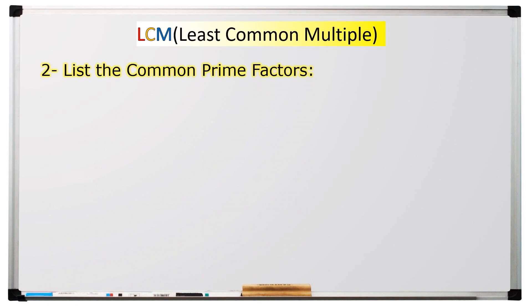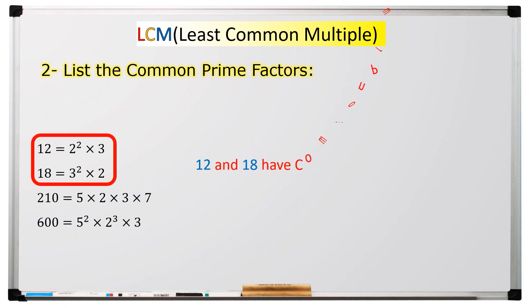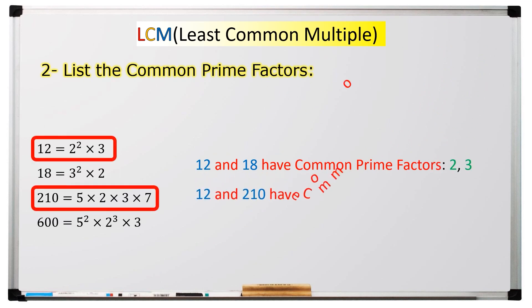The next step to consider is listing the common prime factors. You should compare two or more numbers to determine whether they have prime numbers in common. If they do, you should write down all the common prime factors. Otherwise, you can skip this step. If you pay attention, twelve and eighteen have two and three in common. Similarly, twelve and two hundred ten have two and three in common, as in the previous example.